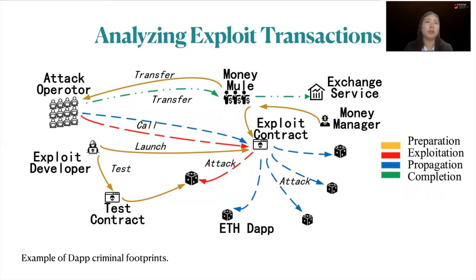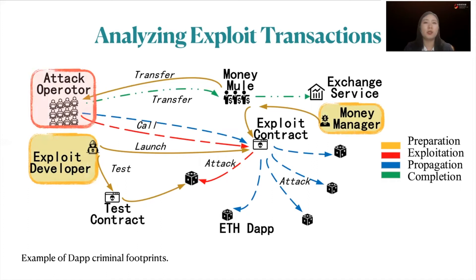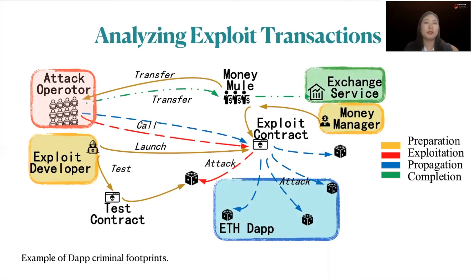In the attack preparation stage, a DApp attack starts with transactions calling the victim DApp from exploit developers to test exploit code. We observe that many managers transfer funds into the exploit contracts through mixing services to conceal their EOAs. Then in the exploitation stage, multiple attack operators invoke the exploit contracts to attack the victim DApp and gain profit. After the attack, in the propagation stage, operators reuse or adjust the exploit contract to target other similar DApps. During mission completion, operators destruct the exploit contracts and withdraw attack profits.